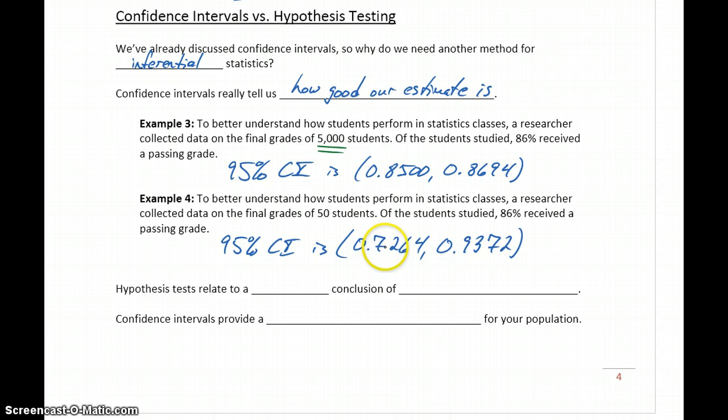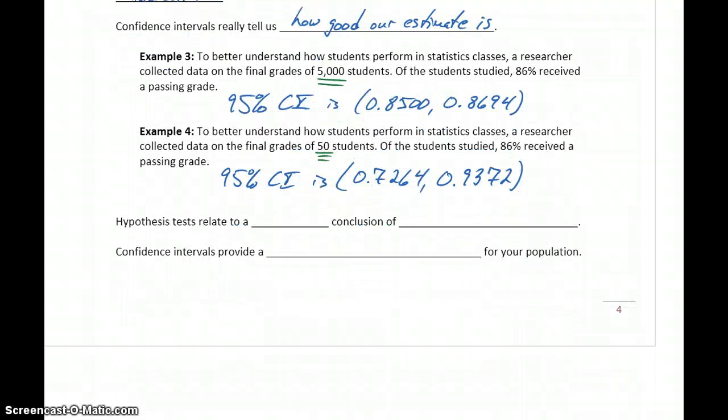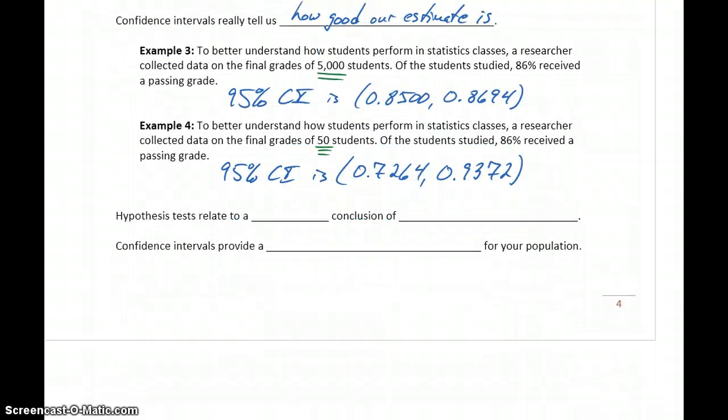Here, it could be anywhere as low as a little over 72% up to almost 94%, a span of three different letter grades. We have a much wider range as a result of that much smaller sample size. One of the things that confidence intervals really do is let us see how good our estimate is. It's going to be much better if we can draw a conclusion with an interval like this versus an interval with such a wide range.